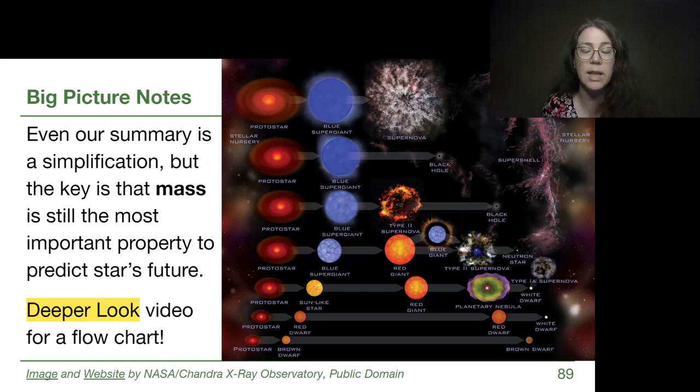And then the one right below that, the Sun-like star creating a red giant, then a planetary nebula, and a white dwarf. That was the conversation that we, or the answer that we just had in the previous one. So in conversation with that multiple choice, that was our answer on the previous slide.